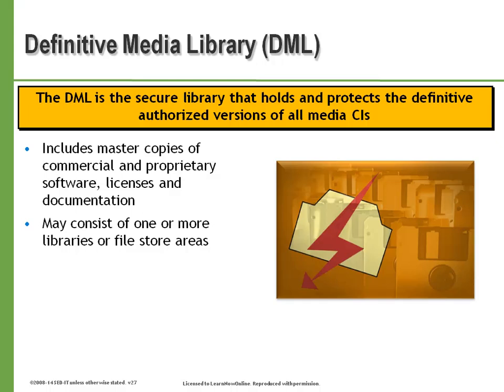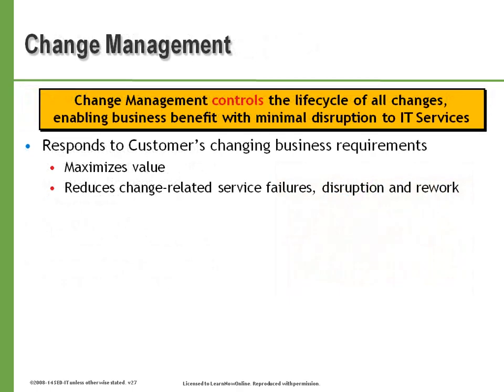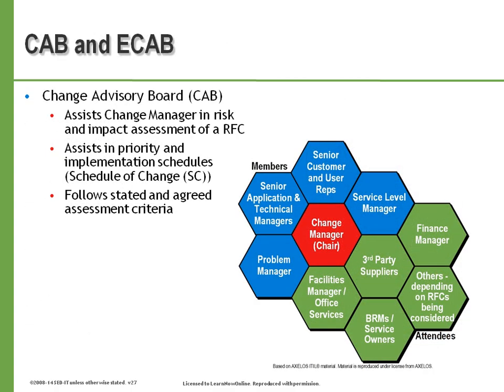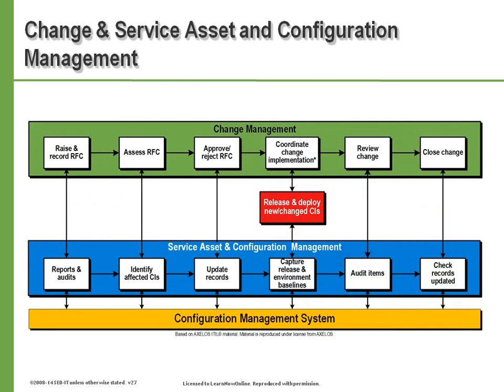From there, we will move to the Service Operation processes. These processes include Event Management, to manage all events through their lifecycle. Incident Management, another major process that manages incidents to minimize the impact to both the business and the customer. And the last major process is Problem Management, a major process which provides a means to proactively manage problems. Request Fulfillment is the last of the operation processes, responsible for managing the lifecycle of all service requests. And the last process within Service Operation is Access Management, which provides customers and users the appropriate rights to access services.